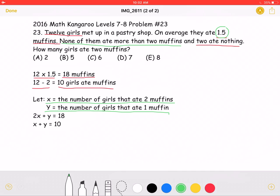This means that 2 times x plus y would be equal to the total number of muffins eaten, which would be 18. Now, we also know that x plus y would be equal to 10, because a total of 10 girls ate muffins.